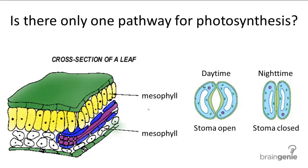Photosynthesis usually occurs in the mesophyll cells of the leaf. During the day, the stomata on the underside of the leaf stay open to let CO2 pass in and O2 pass out. But while the stomata are open, it also inevitably lets H2O transpire or evaporate out of the plant. That's why at night the stomata are closed to prevent any water from transpiring out and minimizing unnecessary water loss.